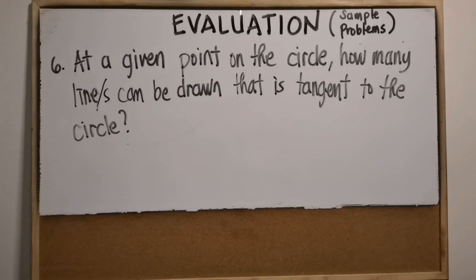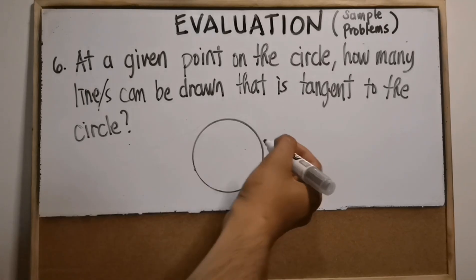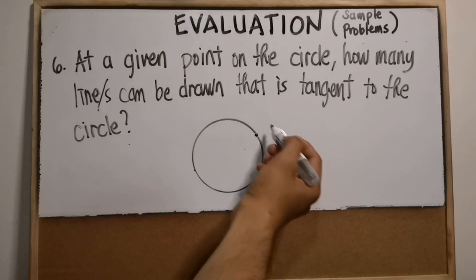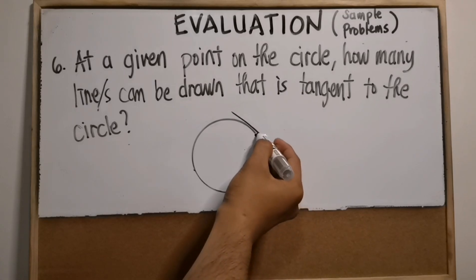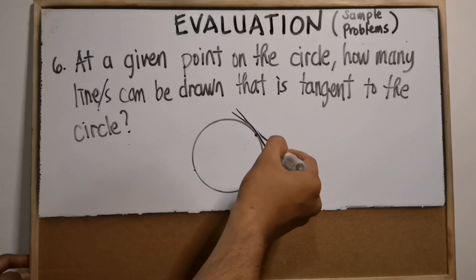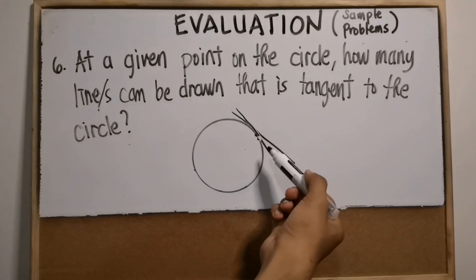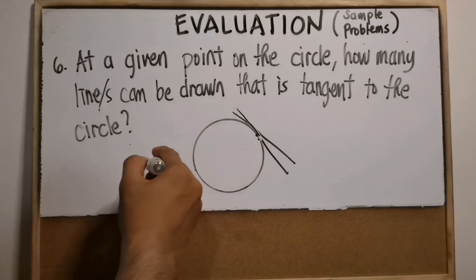Number six: at a given point on the circle, how many lines can be drawn that are tangent to the circle? The theorem states there can only be one tangent line drawn at a certain point on the circle. If you draw another tangent line that appears similar, the point of tangency is different. So the answer is one.